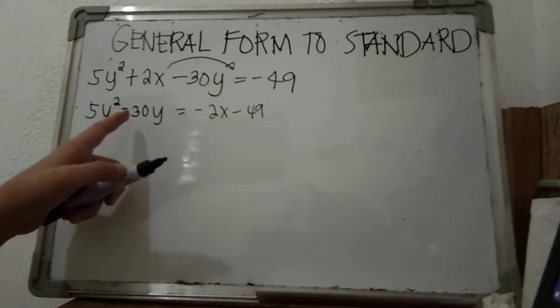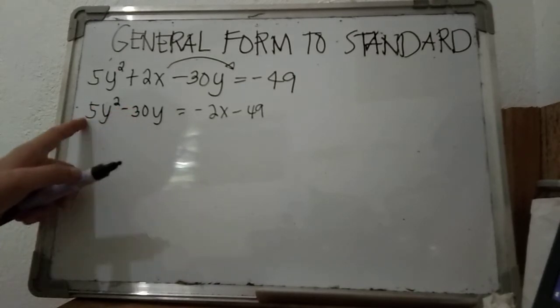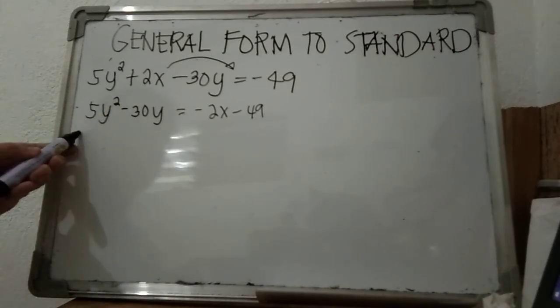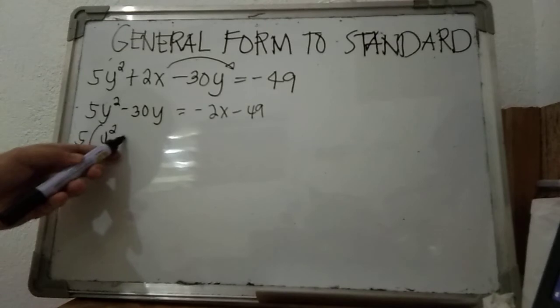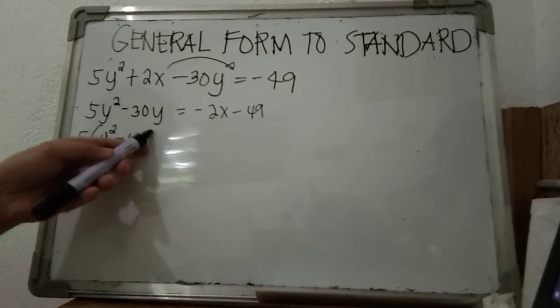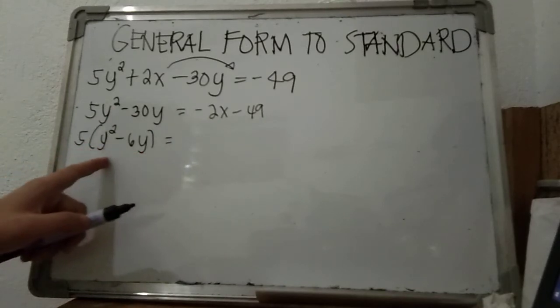5 is actually the common, so factor that out from the equation: 5 times (y² minus 6y). If you're going to distribute 5 to every term inside the parenthesis...